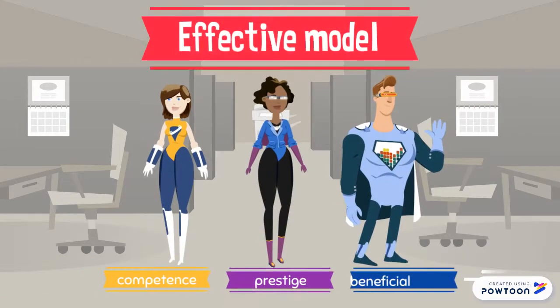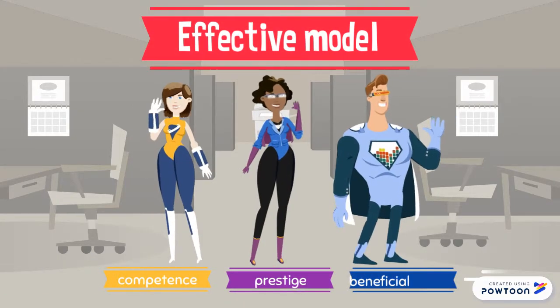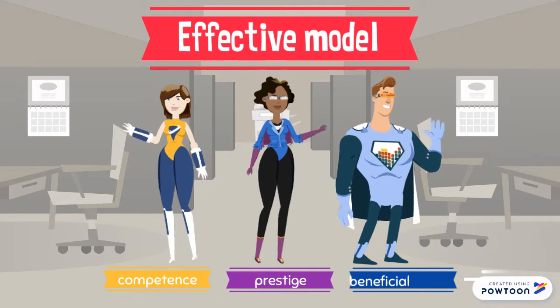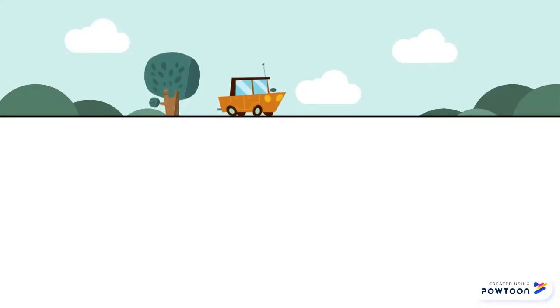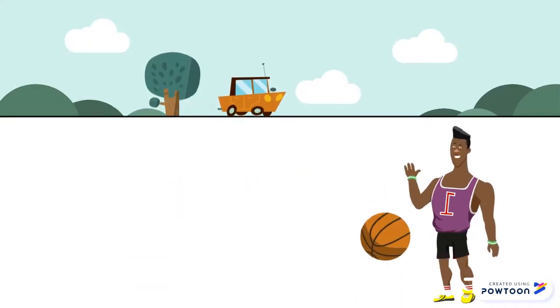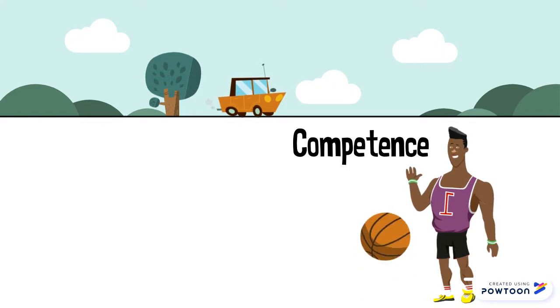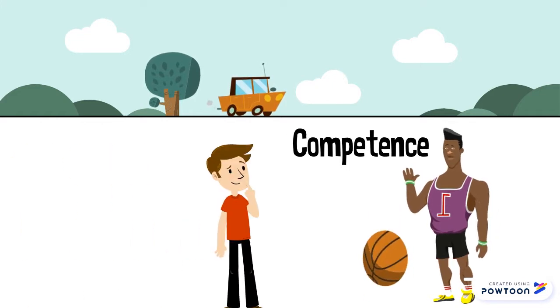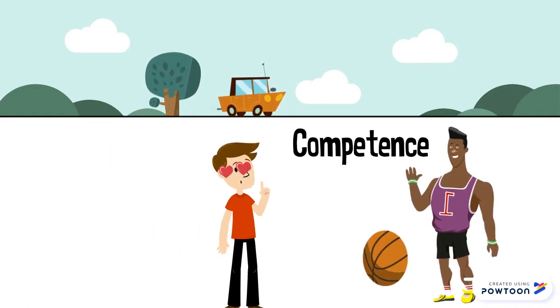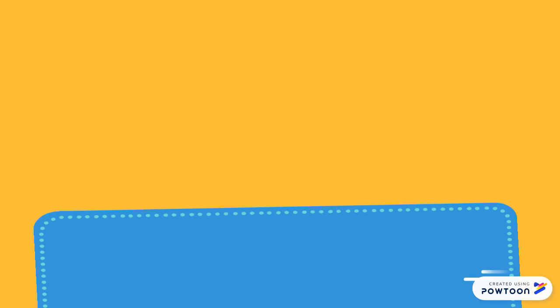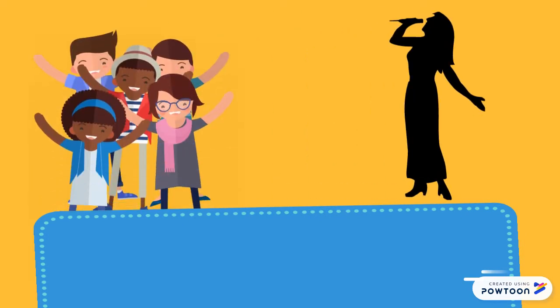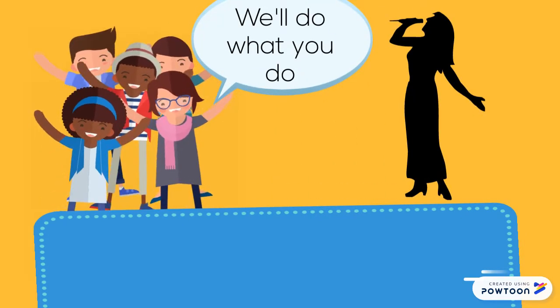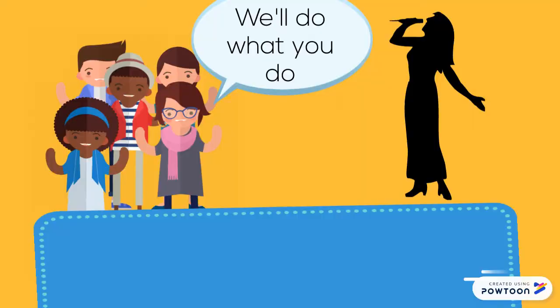But what makes an effective model? For one, competence. For example, learners are more likely to imitate the skills of an NBA basketball player due to his success. Second, influential models typically have prestige and power, like a famous singer.